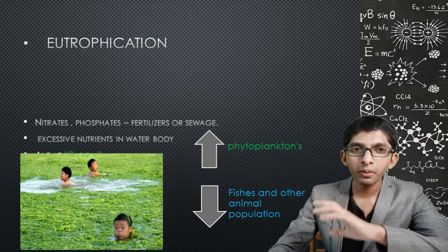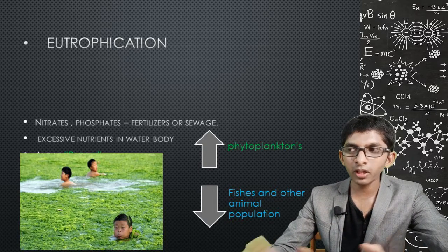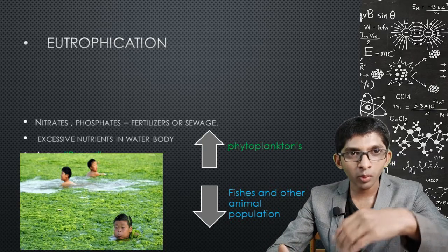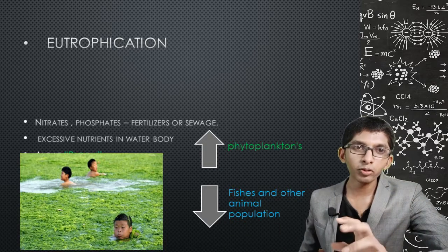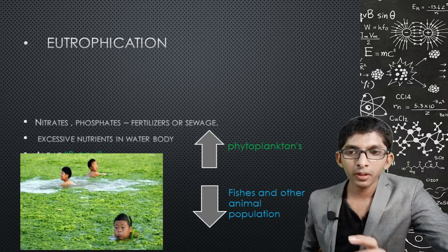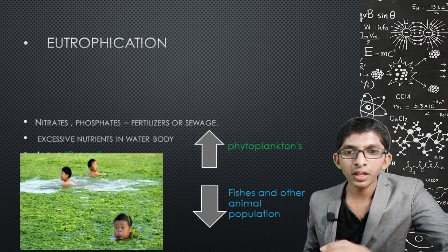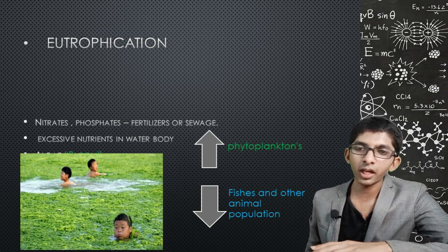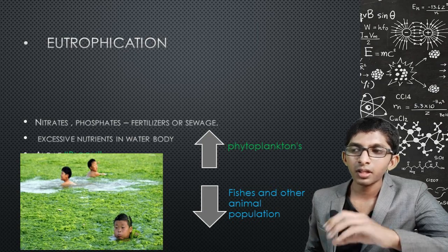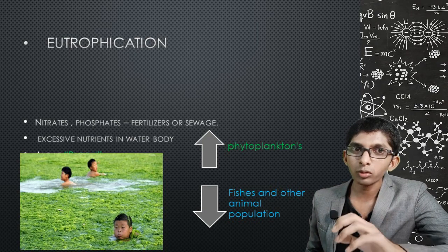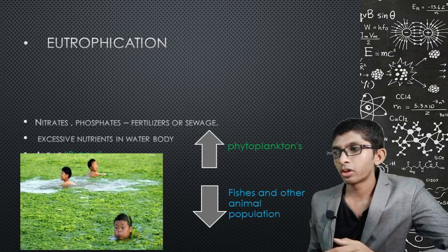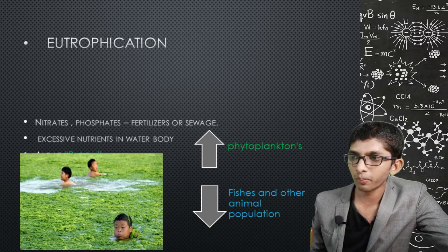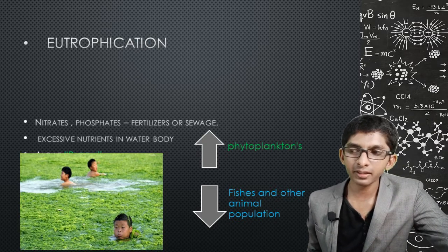Dead phytoplankton and algae accumulate and decompose. Decomposing bacteria consume oxygen during decomposition of these dead bodies. This further depletes oxygen levels in rivers and lakes, affecting fish populations and other aquatic animals.